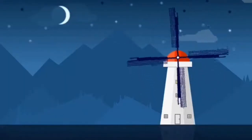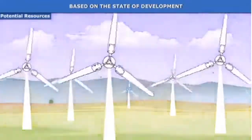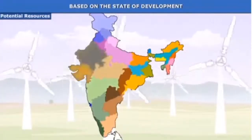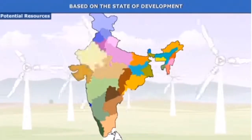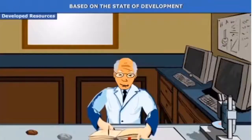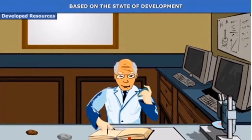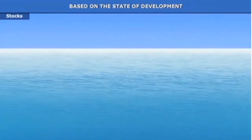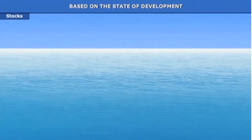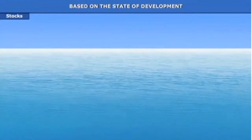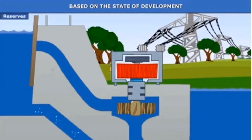Potential resources are found in certain regions but may not have been utilized — for example, Rajasthan and Gujarat have enormous potential for wind and solar energy development, but these have not been fully utilized. Developed resources have been surveyed and their quality and quantity determined; utilizing them depends on available technology and feasibility. Stock resources come from our environment but may have limited availability or lack appropriate technology to mine them. Reserves are resources in stock that can be put to use with the help of technology — for example, water is a rich energy resource.